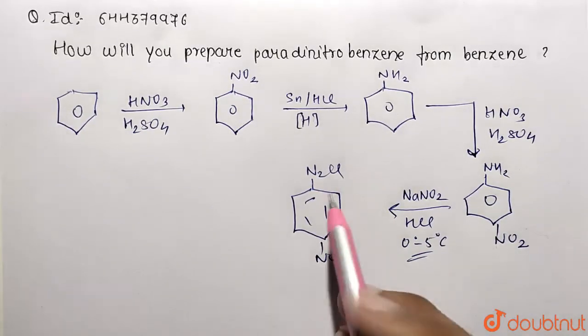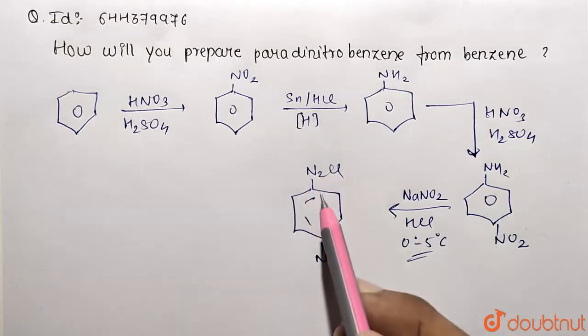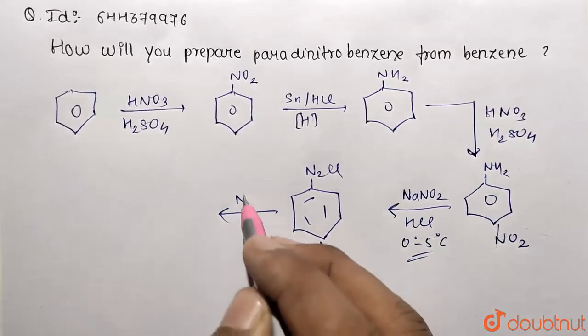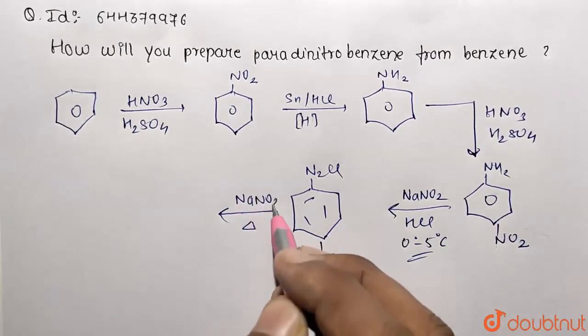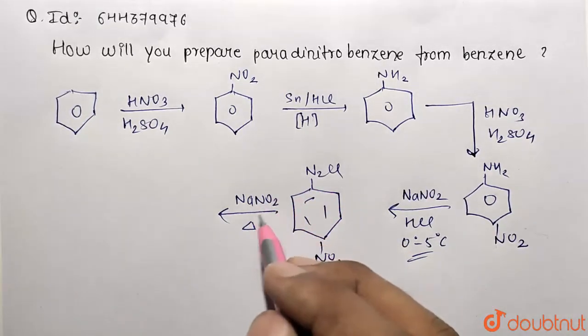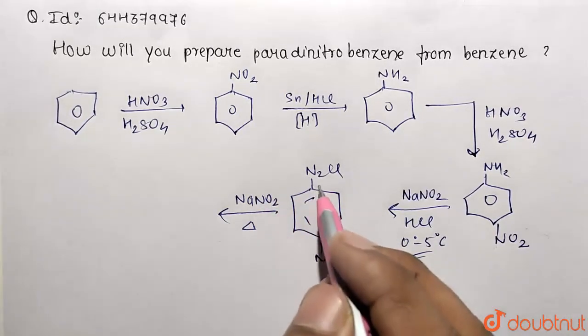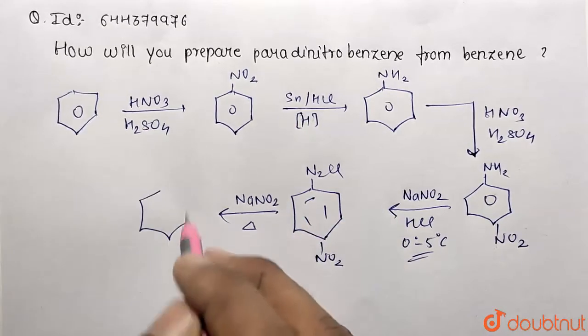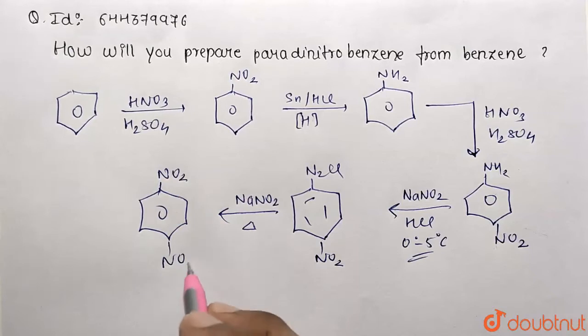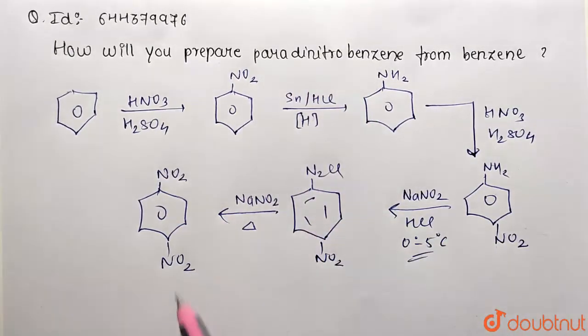Now you need to remove out this molecule with NO2 molecule. So for that you are going to heat this compound. So after heating and you are taking NaNO2, this corresponding NaCl will be removed out. And you are going to get our corresponding NO2 in that position. So this will be generating NO2. So this is going to be the product of our para-dinitrobenzene.